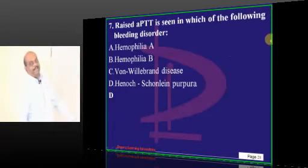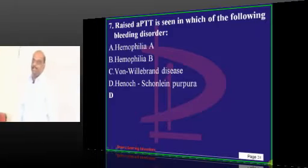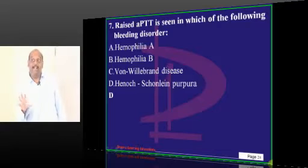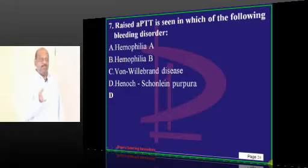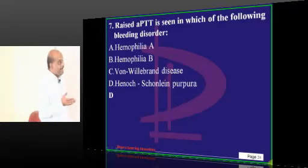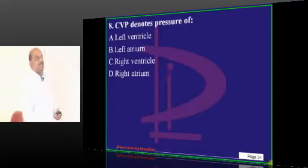What is the specialty of von Willebrand disease? Why does von Willebrand disease cause APTT prolongation? Von Willebrand factor has one more function other than platelet adhesion — stability of factor VIII. So if von Willebrand factor is deficient, factor VIII becomes easily destroyed and that leads to prolongation of the APTT, which is what you have to basically remember.